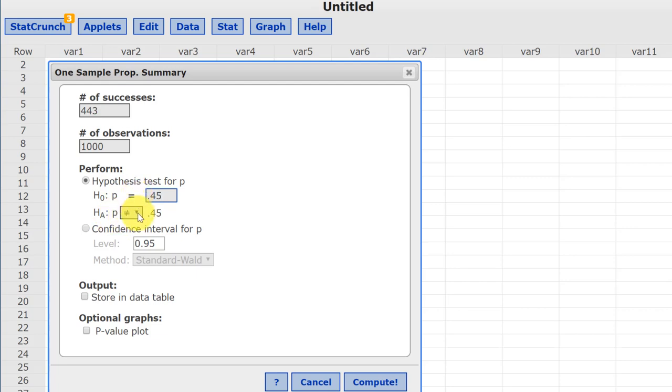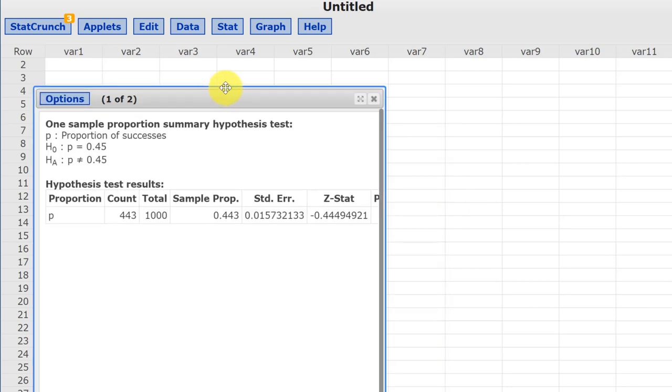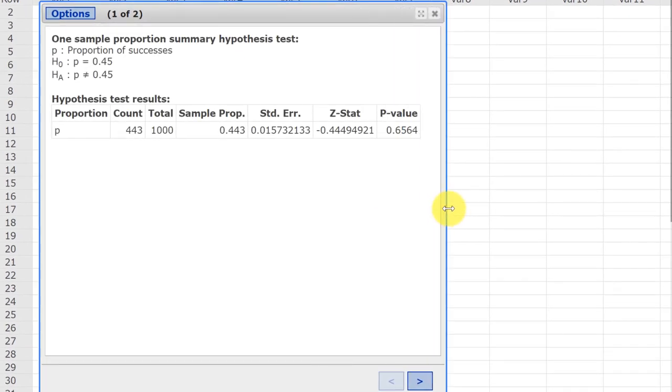So we click compute and we bring up our answer dialog box. We've got to expand it just a bit in order to get all the information there. Check it real quickly to make sure you set it up and we can see we've got our null and alternative set up properly and we're using a proportions test.